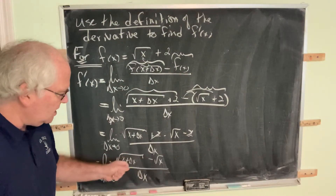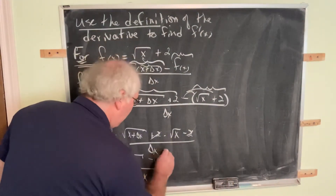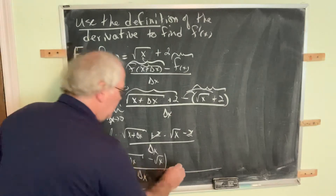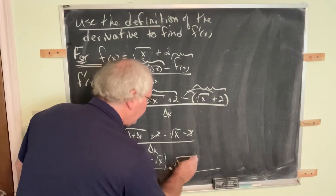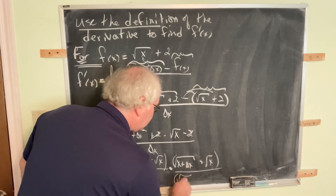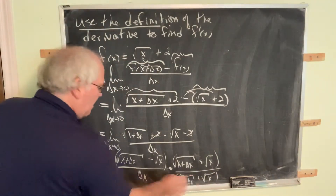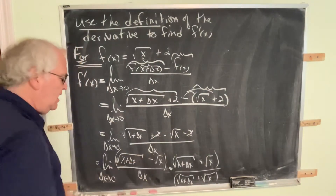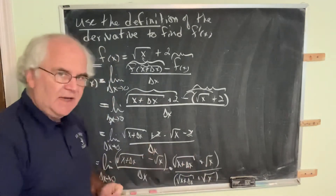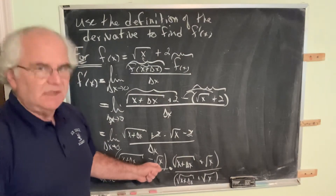We have a conjugate situation with the square root. So we're going to multiply the numerator and the denominator by the conjugate of this expression — that is, the square root of x plus delta x plus the square root of x — and the denominator gets the same. Leave the denominator unmultiplied for now. When you multiply conjugates: square the first, subtract, square the last. Squaring each simply removes the radical.